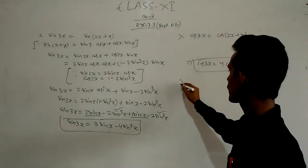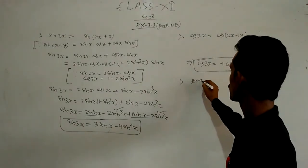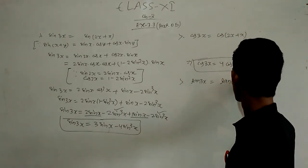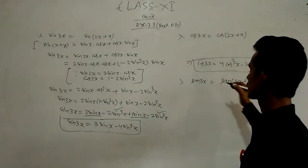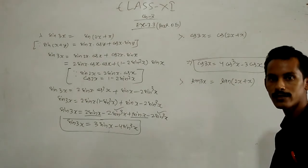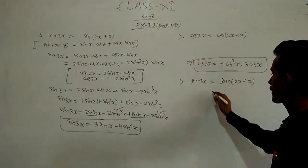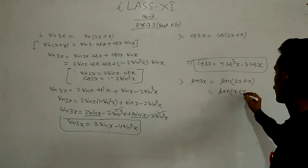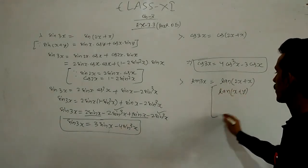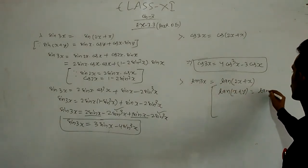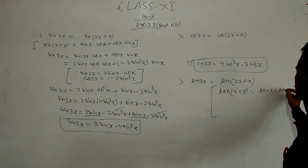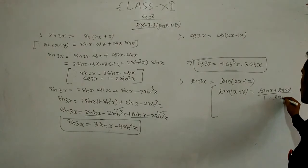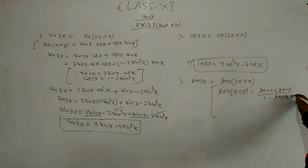Similarly, for tan 3x, you can write tan 3x as tan(2x + x). You can then expand it using the tan(x + y) formula. Do you know this formula? Of course — it is tan x + tan y upon 1 − tan x · tan y.